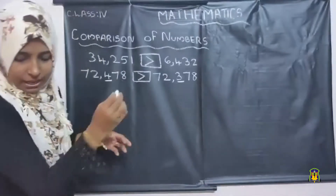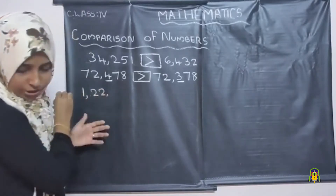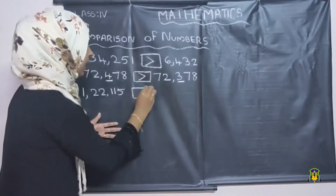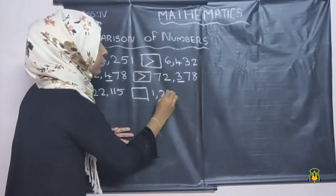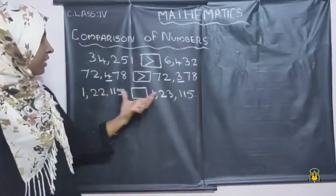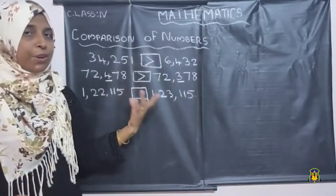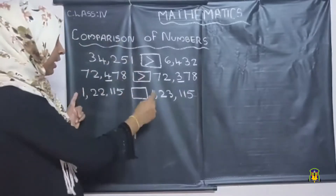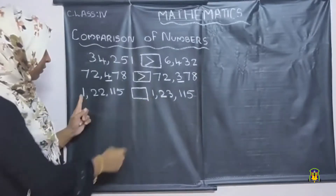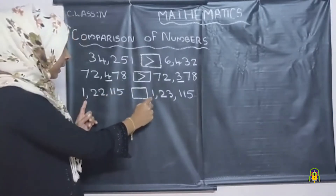Let's do one more example. I am going to write a six-digit number: one lakh twenty-two thousand one hundred fifteen, and one lakh twenty-three thousand one hundred fifteen. Both are six-digit numbers with the same number of digits. So we want to compare from the left side of each number. In the lakh place, we have one in both numbers.